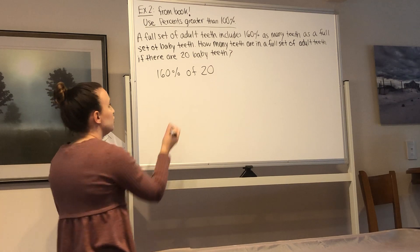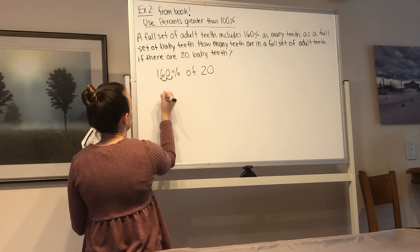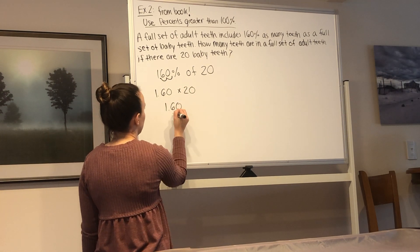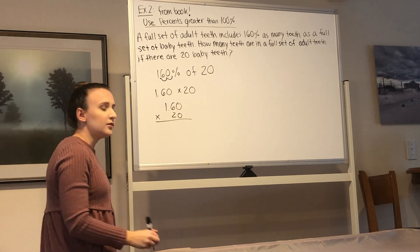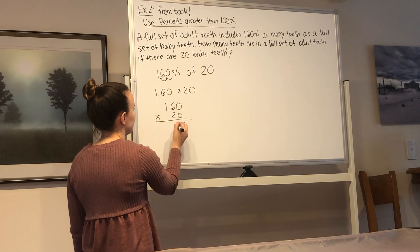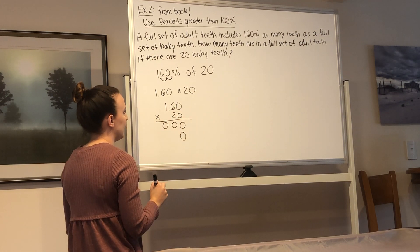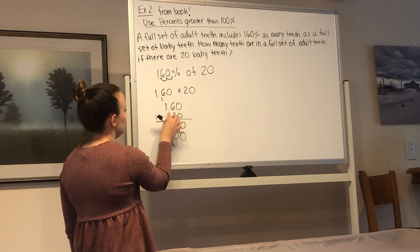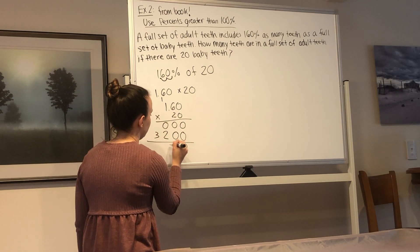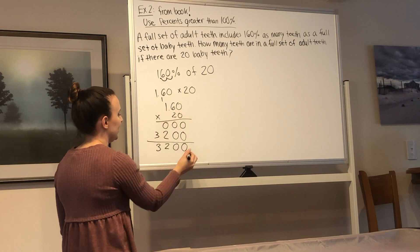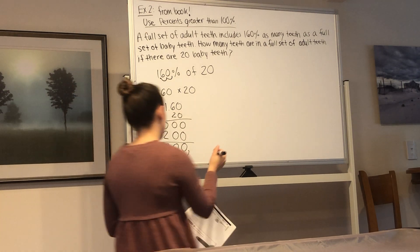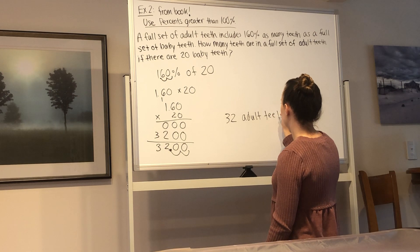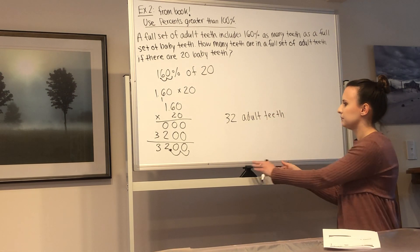So I'm not going to set up a percent proportion for this. I'm going to do it the other way. You can do it either way, though. It doesn't matter. So we need to find what 160% of 20 is to figure out how many adult teeth you have. So we're doing 160% of 20. Remember, we can move the decimal two places to the left. So now it's 1.60 times 20. 1.60 times 20. Multiply. 0 times 0 is 0. 0 times 6 is 0. 0 times 1 is 0. Put a 0 down. 2 times 0 is 0. 2 times 6 is 12. 2 times 1 is 2. Plus 1 is 3. Add it all up. Move the decimal two places. And you get 32.0. So 32 adult teeth.